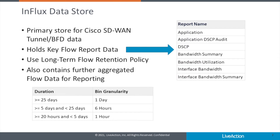The Influx store has three roles. With SD-WAN BFD data being the first, here are the other aspects. There are seven key flow reports that the Influx store holds: Application, Application DSCP Audit, DSCP, Bandwidth Utilization, Bandwidth Summary, Interface Bandwidth, and Interface Bandwidth Summary. You'll be running data from the Influx store when you use those reports. The bin durations that roll into the Influx store are also shown here — any report run with longer bin durations of one hour, six hours, or one day will use the Influx store.